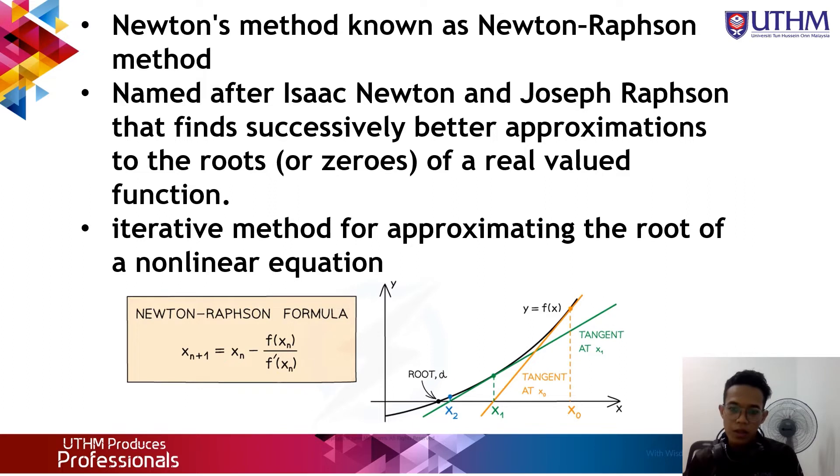Newton's method, also known as the Newton-Raphson method, is named after Isaac Newton and Joseph Raphson. It finds successively better approximations to the roots or zeros of a real-valued function. It's an iterative method for approximating the root of a non-linear equation. The figure below shows the formula x_{n+1} = x_n - f(x_n)/f'(x_n) and the graph.